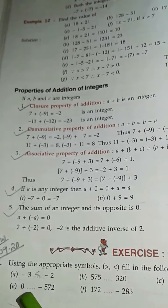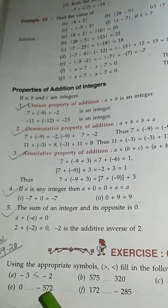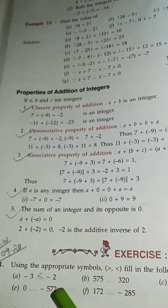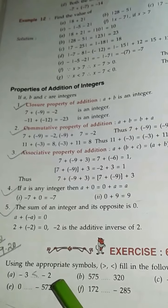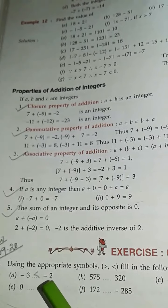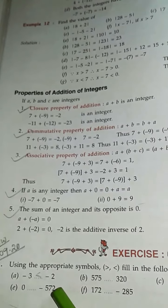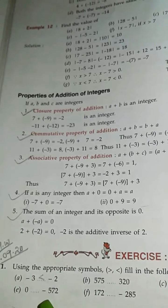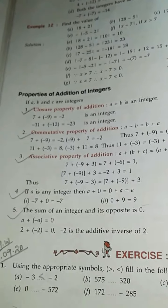Here, part B is 0 dash minus 572. Here, minus 572 is on the left side of 0. So this one is less than and this one is greater than. So here you put 0 greater than minus 572.